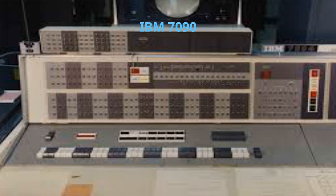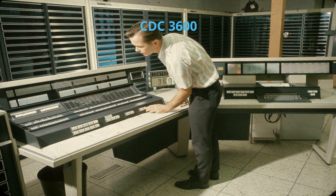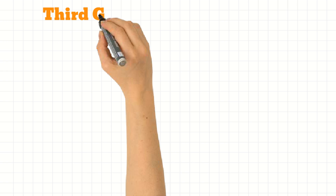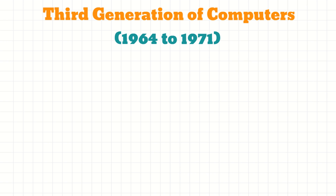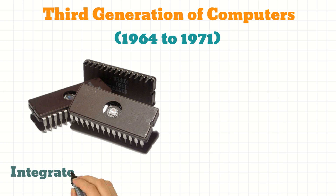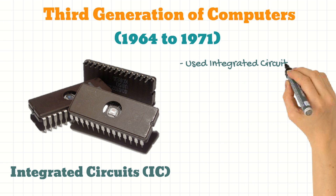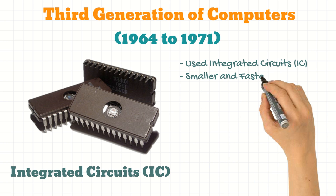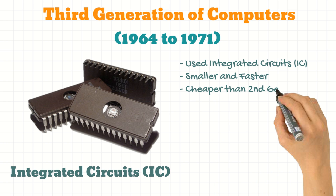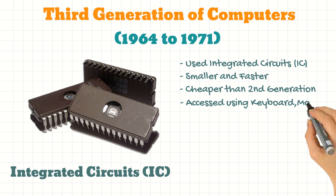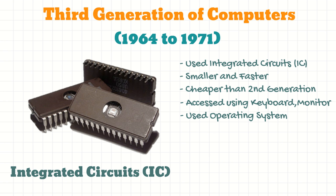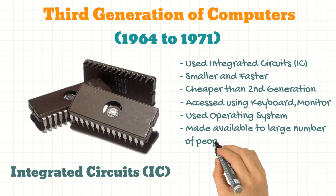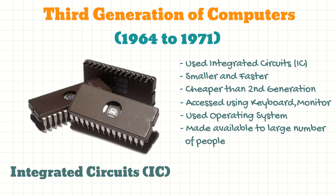Examples include IBM 7090 and CDC 3600. The third generation of computers was between 1964 to 1971 when integrated circuits, or ICs, replaced the transistors. This made the computers smaller, faster and cheaper than earlier computers. They were accessed through keyboard and monitor, and even had an operating system to enable them to run different applications at the same time. They were now made available to a larger number of people as they were smaller and cheaper.